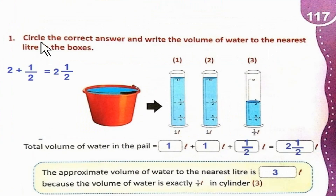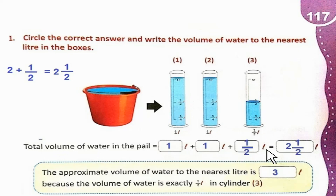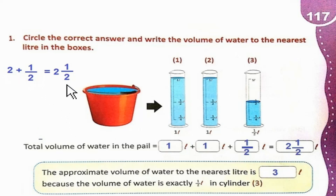Page 117. Circle the correct answer and write the volume of water to the nearest liter in the boxes. जब वो water हम cylinders में डालेंगे तो 2 one-liter cylinders full भर जाएंगे — 1 liter and 1 liter. और तीसरा cylinder exact half liter के mark तक भरा है. Total volume of water in the pail is 1 liter + 1 liter + 1/2 liter = 2 and 1/2 liter.